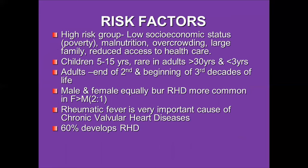Acute rheumatic fever occurs in children between the ages of 5 to 15 years and is rare in adults above 30 or in children less than 3 years old. It is more common in females compared to males. Rheumatic fever is a very important cause of chronic valvular heart disease, and about 60% of patients who develop acute rheumatic fever end up with rheumatic heart disease.